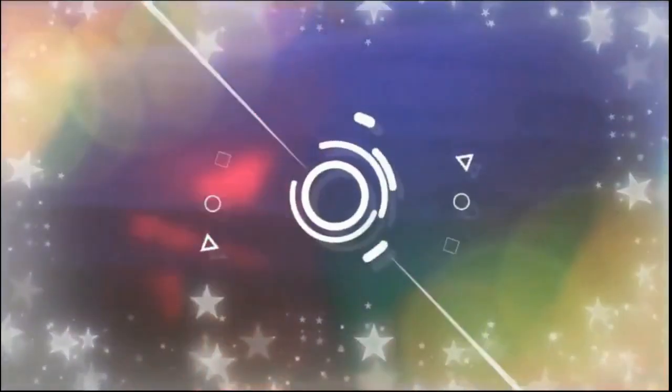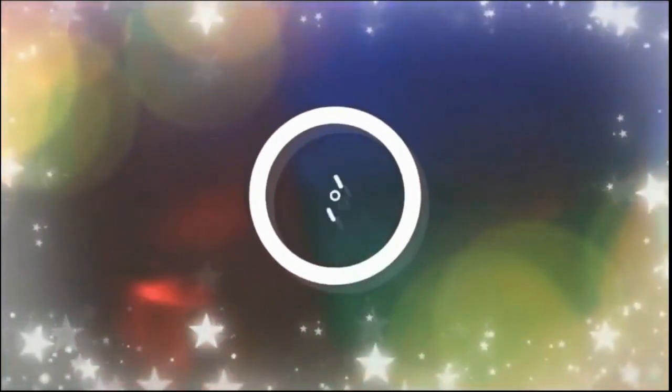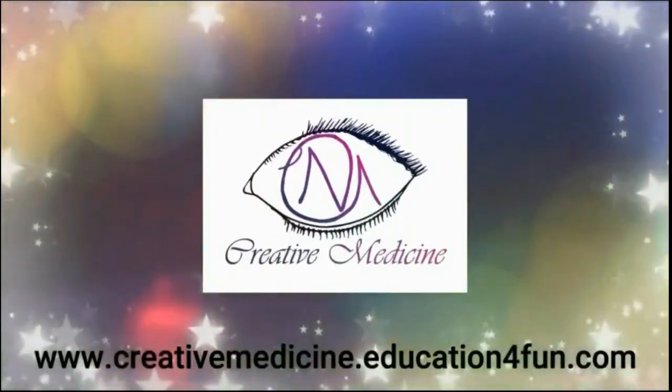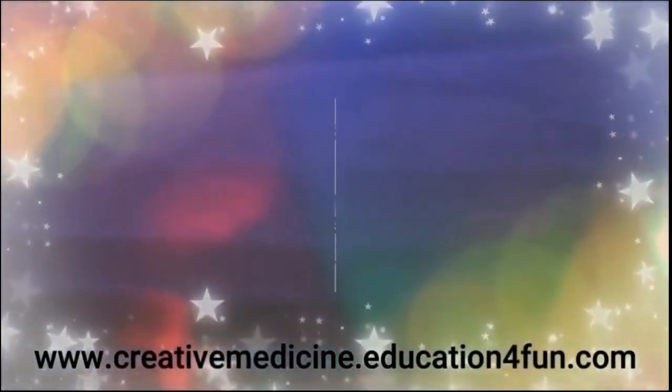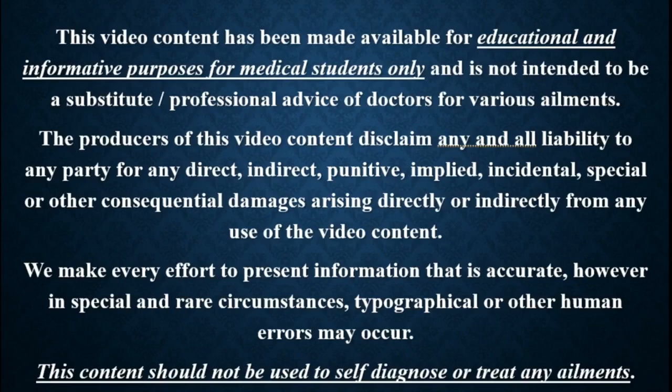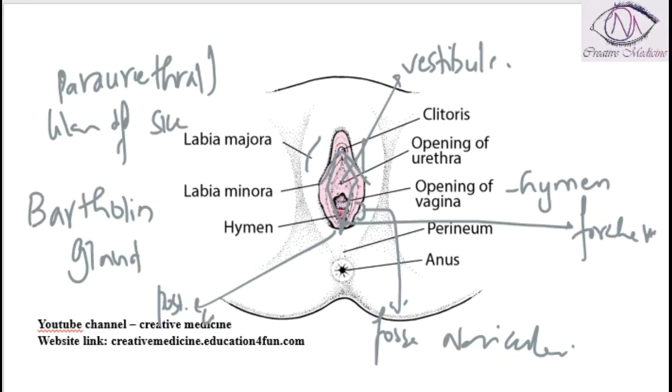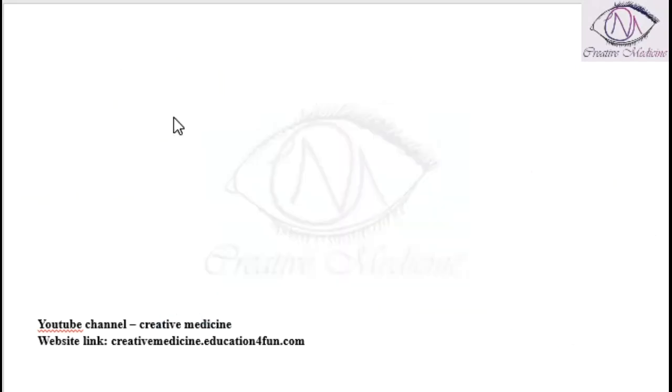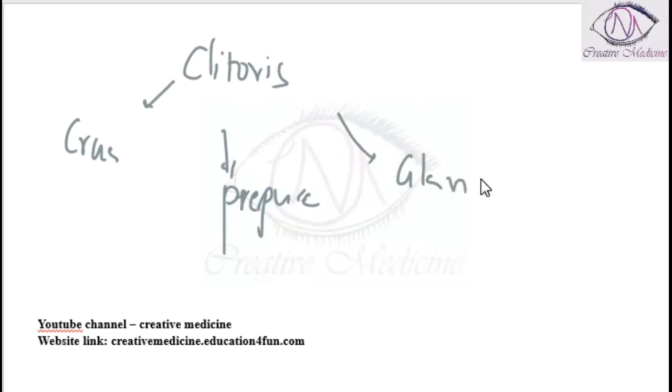Hello friends, welcome to Creative Medicine. In this lecture, we will learn about clitoris. There are three parts of clitoris: crus, prepuce, and glans. Clitoris is a highly vascular structure. The lymph node drainage of clitoris is superficial inguinal lymph node.